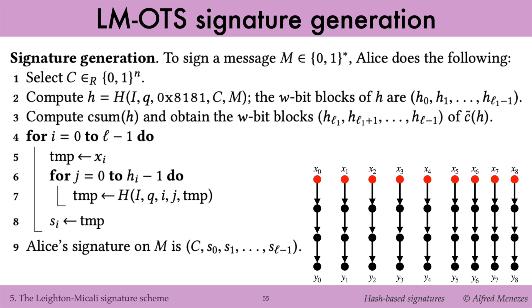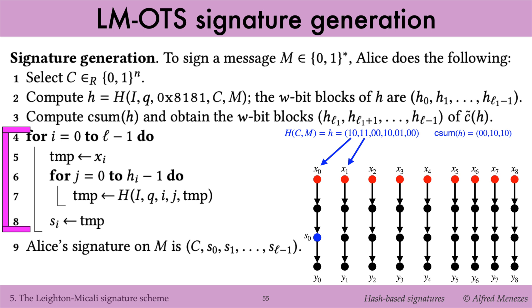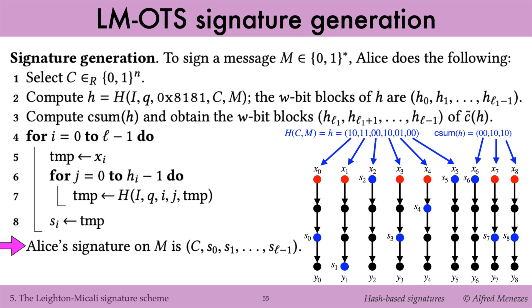To sign the message M, Alice selects a message randomizer C and hashes it together with M. The W-bit blocks of the resulting hash value H are denoted H0, H1, up to H_{L1-1}. She computes the checksum of H and the W-bit blocks of its binary representation, denoted H_{L1}, H_{L1+1}, up to H_{L-1}. Then, for each W-bit block H_i, Alice computes the value S_i on the i-th hash chain, that is distance H_i from the starting value X_i. Alice's signature on M consists of the randomizer C and the list of S_i values.